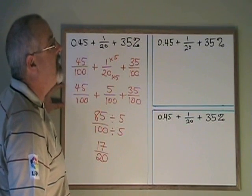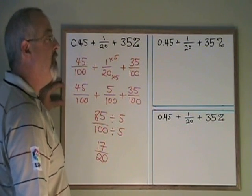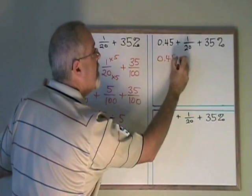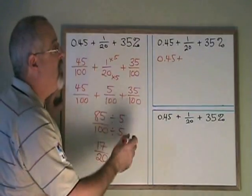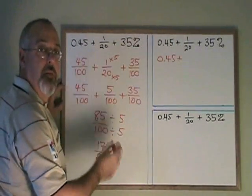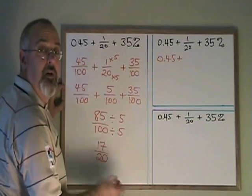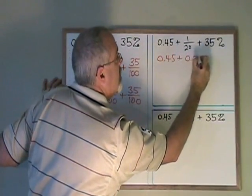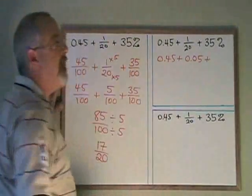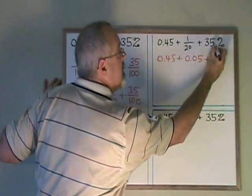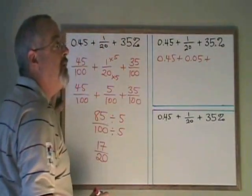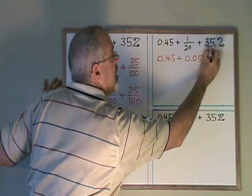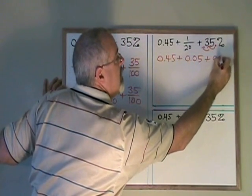Now let's do the same expression, but we'll convert everything into decimal. 0.45 is already in decimal form. I don't have room to show a division here, but I can do a division with pencil and paper 1 divided by 20, or I can use my calculator to convert 1 20th into 0.05. 35%, remember that's a decimal right there, and when you convert a percent into a decimal, you move the decimal two spaces to the left. So we end up with 0.35.